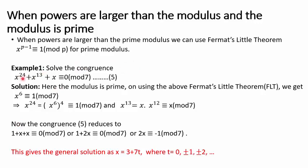We are asked to solve the congruence x²⁴ + x¹³ + x ≡ 0 (mod 7). This is a polynomial congruence of degree 24. We notice the modulus is 7, which is prime, so we can safely use Fermat's Little Theorem (FLT). This gives us x⁶ ≡ 1 (mod 7), since x^(p−1) with p = 7.